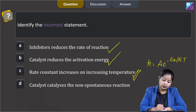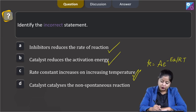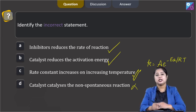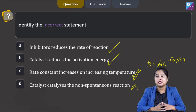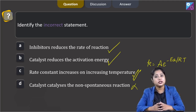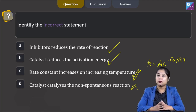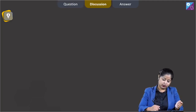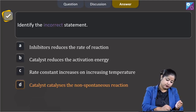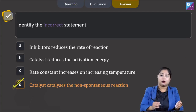Moving to the last statement: catalyst catalyzes the non-spontaneous reaction. This is an incorrect statement, as a catalyst catalyzes the spontaneous reaction — it would not be able to catalyze a non-spontaneous reaction. That means the correct answer is option number D.